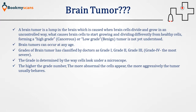Grades of brain tumour have been classified by doctors as grade 1, grade 2, grade 3 and grade 4. The grade is determined by the way cells look under a microscope. The higher the grade number, the more abnormal the cells appear and the more aggressive the tumour usually behaves.